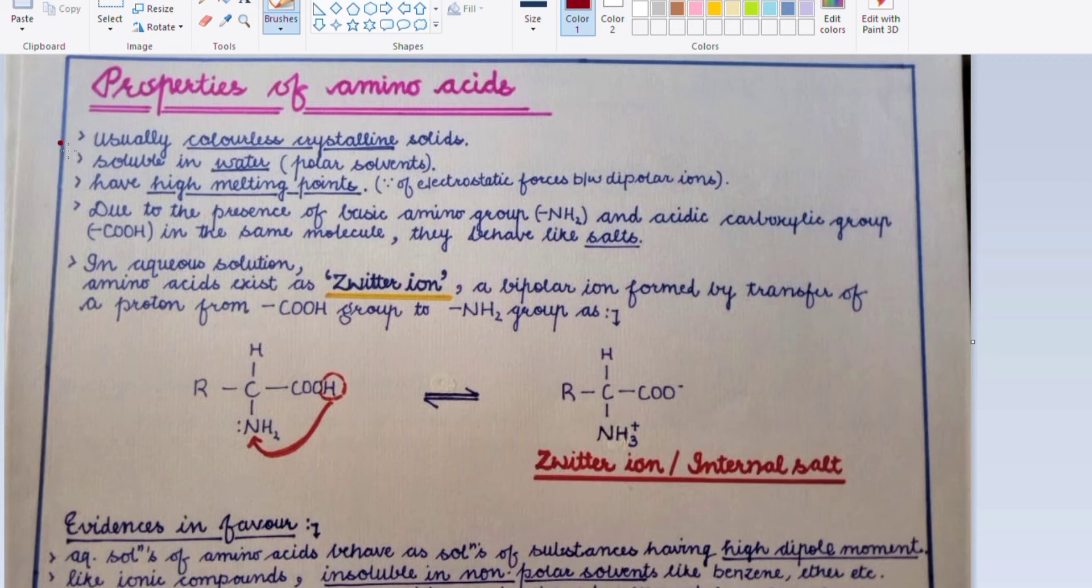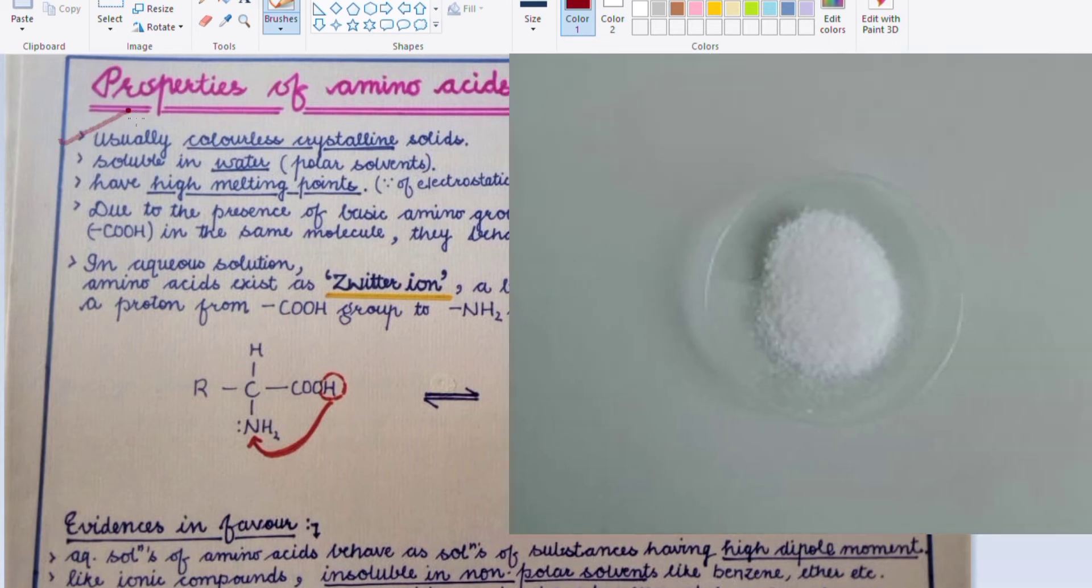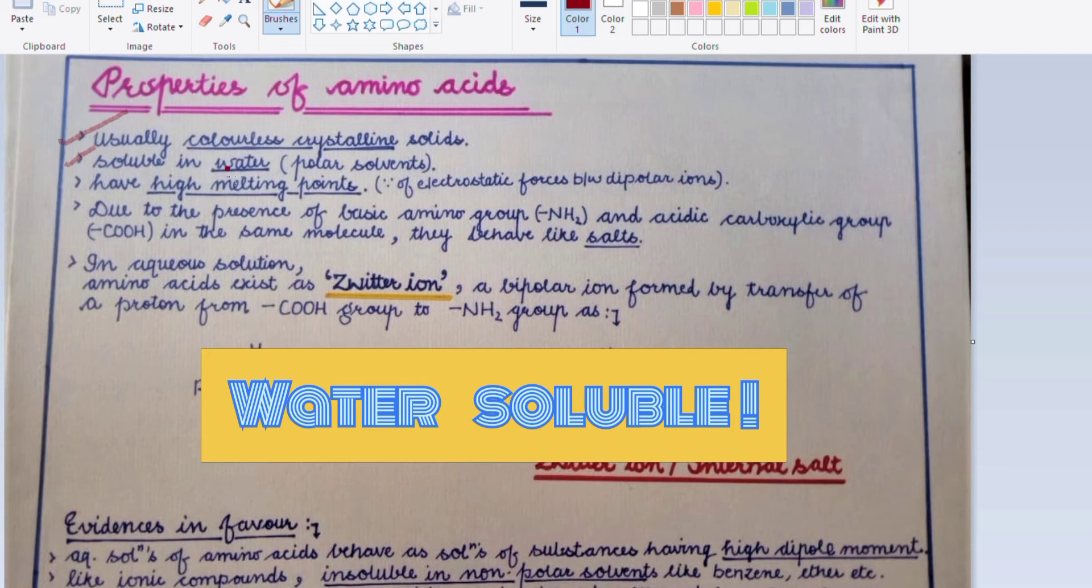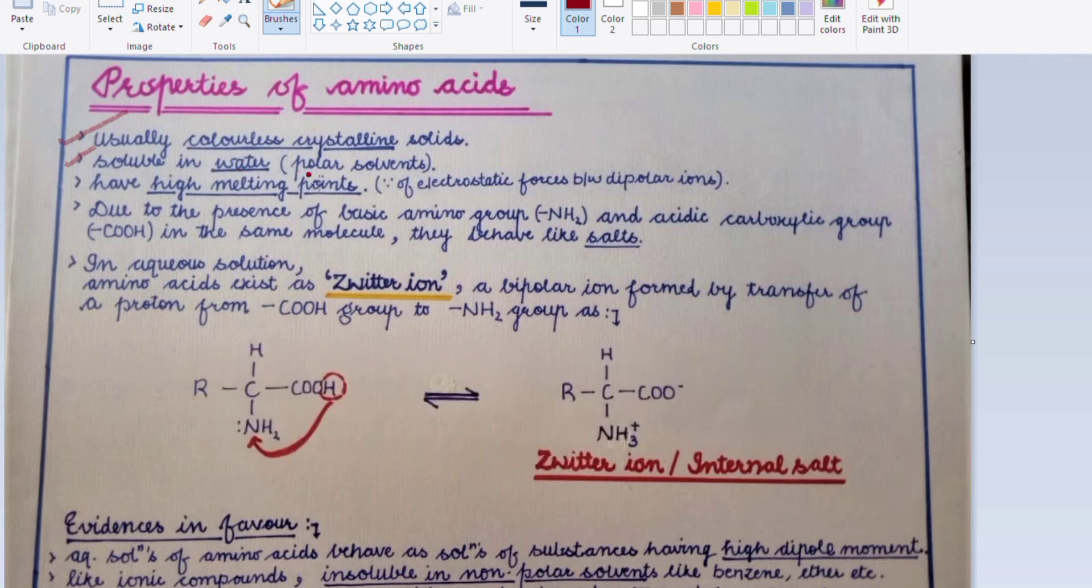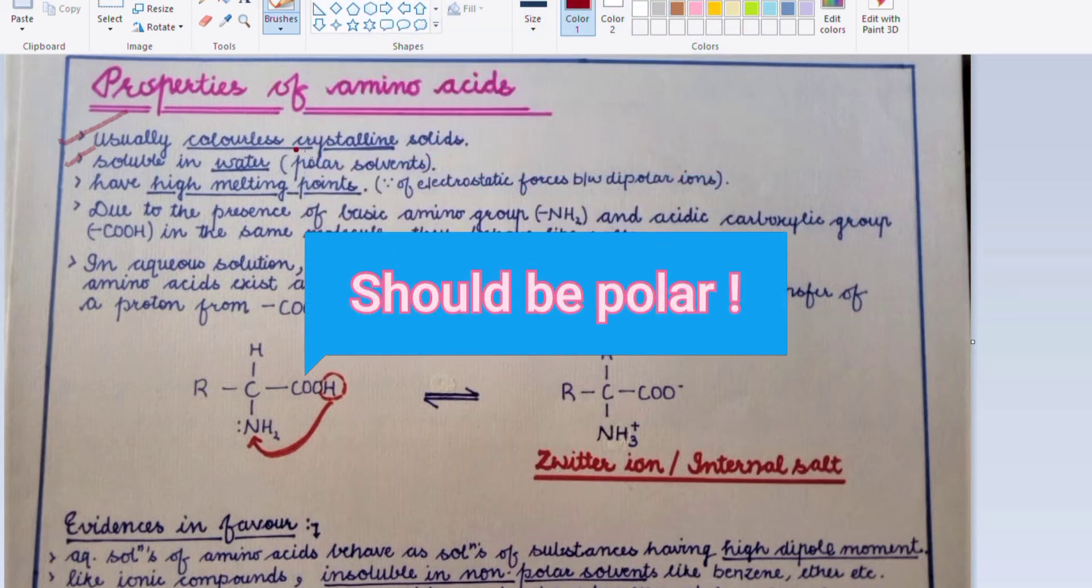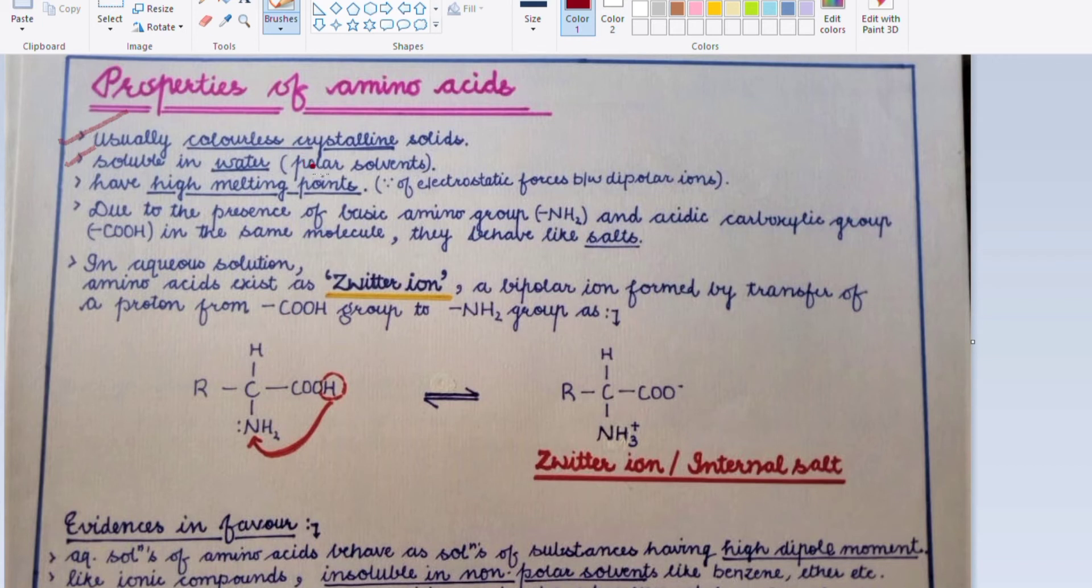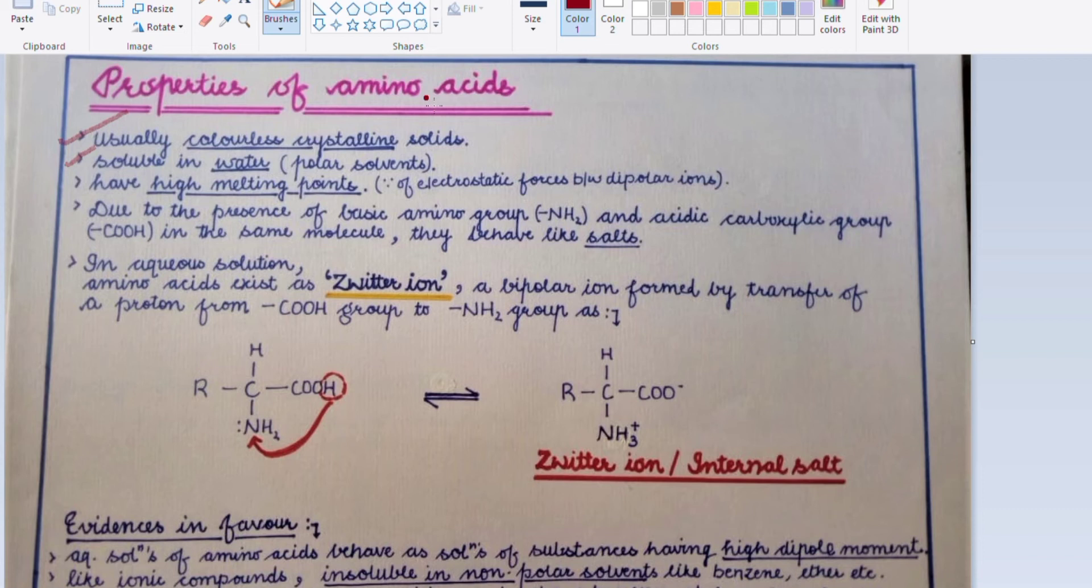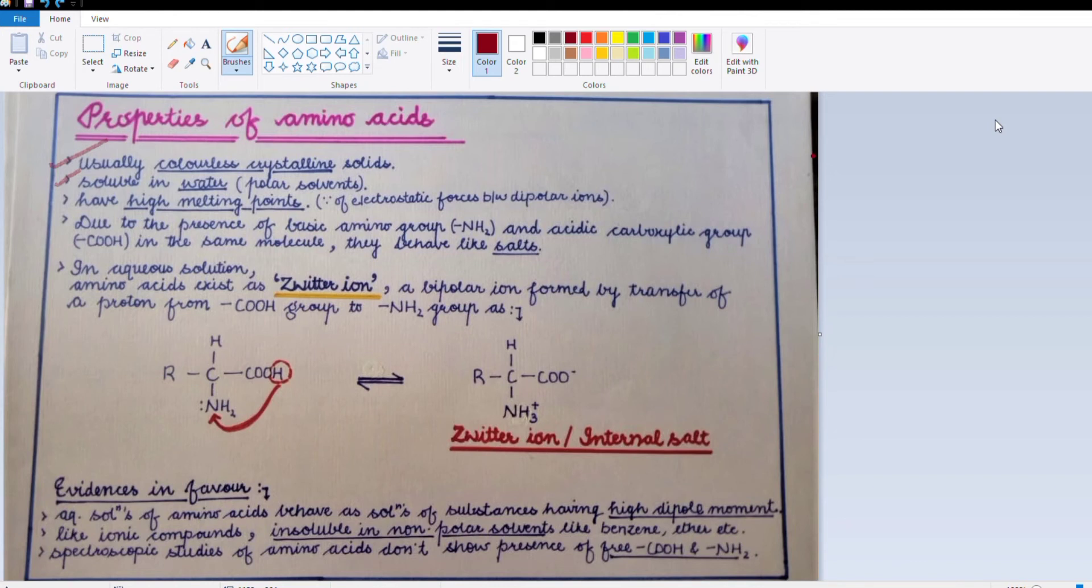The first property of amino acids is that they are colorless crystalline solids. The second property is that they are water-soluble in polar solvents, which means their nature is polar. Because we have studied the rule that like dissolves like - if amino acids are polar, they will dissolve in polar solvents. This gives us a hint that amino acids are polar in nature.